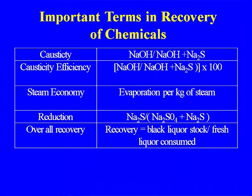These are the terms already discussed: causticity, causticizing efficiency, steam economy — which is very important: evaporation per kg of steam. Reduction is NA2S divided by (NA2S + NA2SO4). Overall recovery equals black liquor stock plus fresh liquor consumed, because whatever chemicals are recovered — the overall recovery should be 95 percent or more if you want better economy.